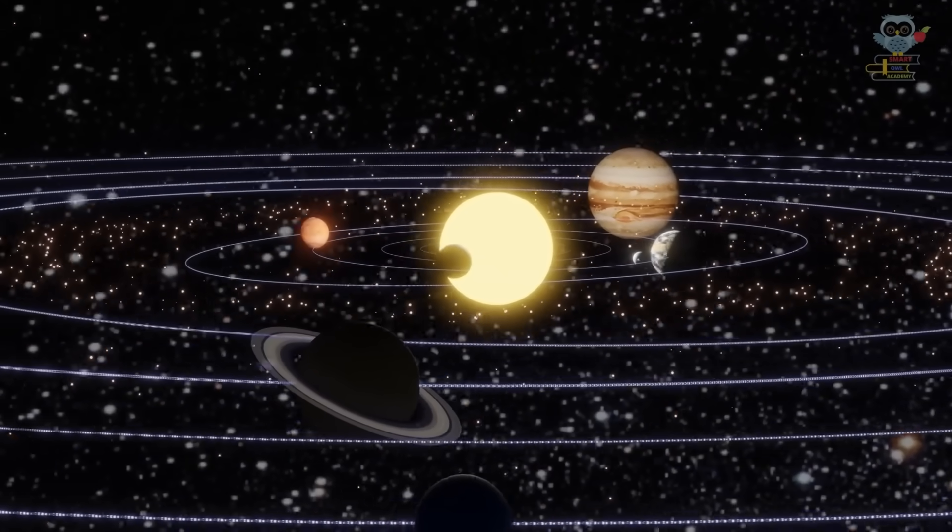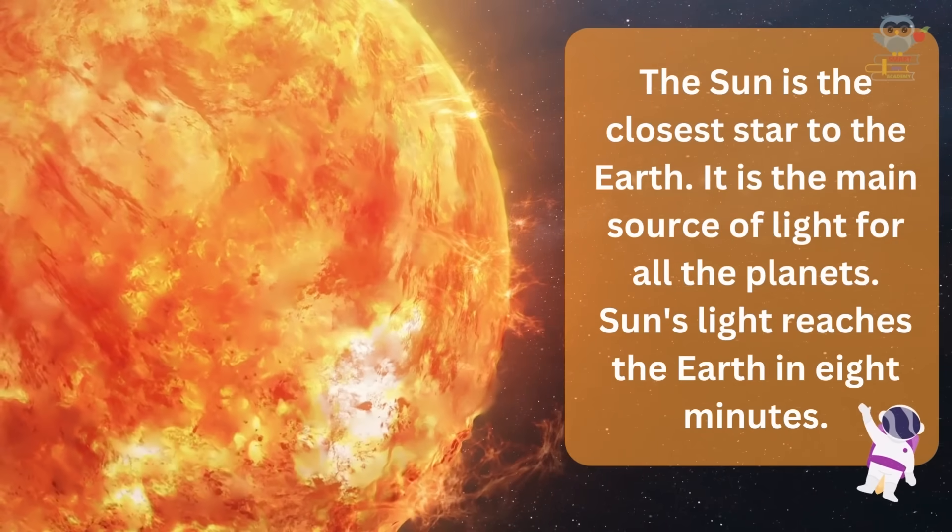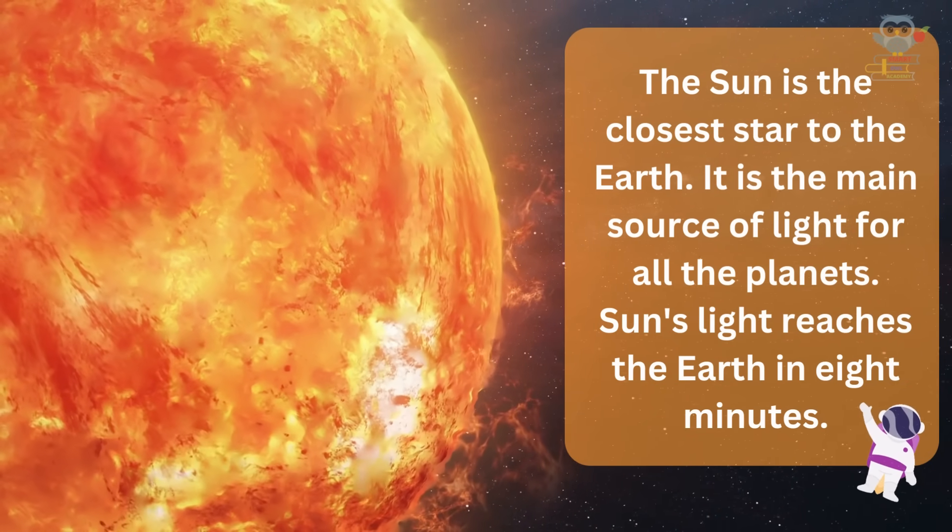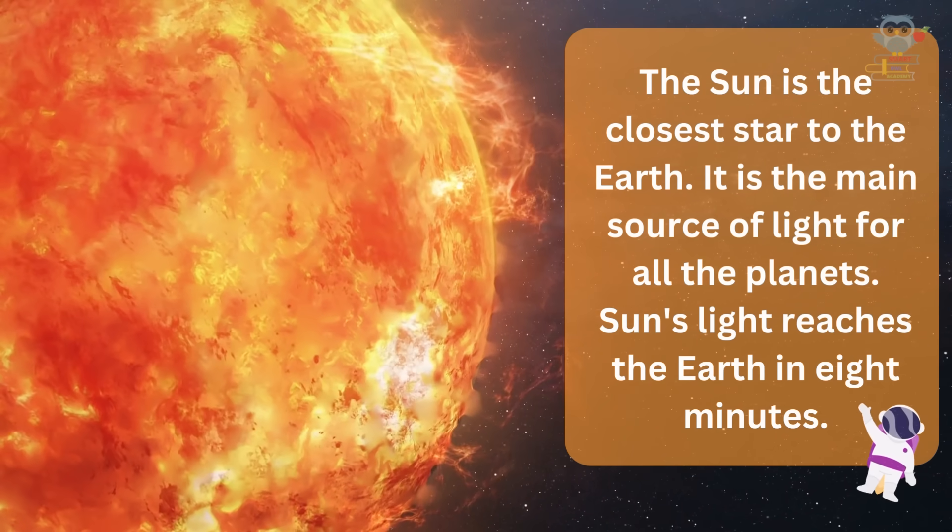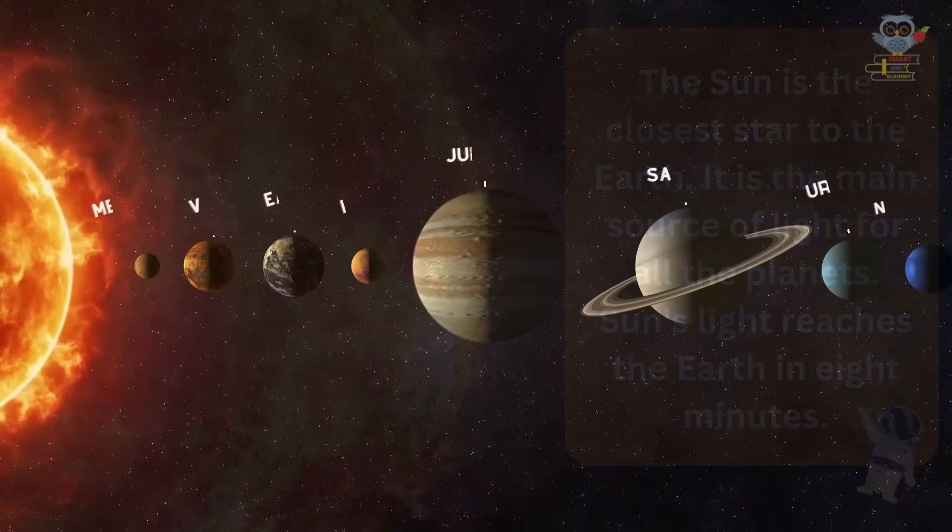In the center, there is the biggest star called Sun. The Sun is the closest star to the Earth. It is the main source of light for all the planets. Sun's light reaches the Earth in eight minutes.